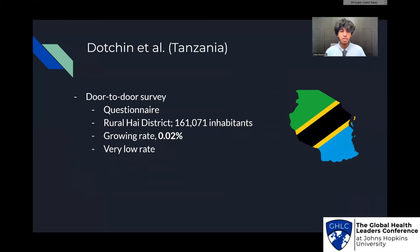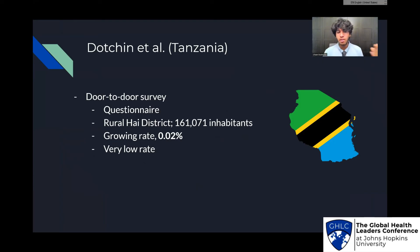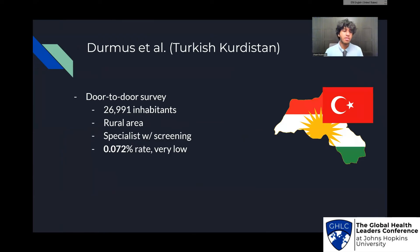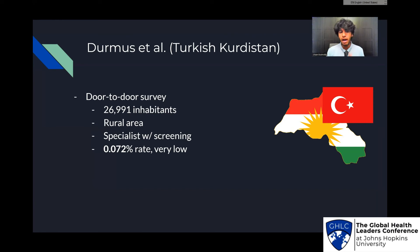Darshan et al. in Tanzania was instead a door-to-door survey and questionnaire conducted in a rural high district. The rate was very low at 0.02%, which could be because people were not educated to know that they had Parkinson's disease, and a lack of trusted consultants and professionals resulted in low diagnoses. That's why it's important — as done in Dramz et al. in Turkish-Kurdistan — to have a specialist following the main researcher group to diagnose individuals if they did not already have a diagnosis, thus diagnosing more individuals and reflecting a more accurate rate. Although the rate was still very low, because a specialist screened participants, it can be assumed this was a more accurate rate.